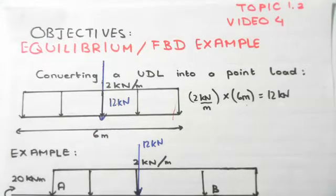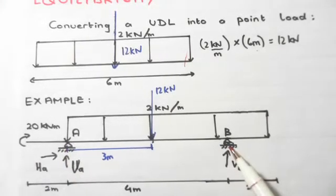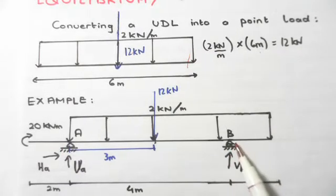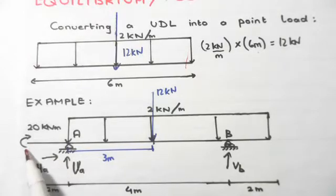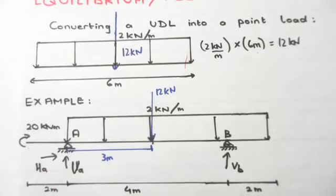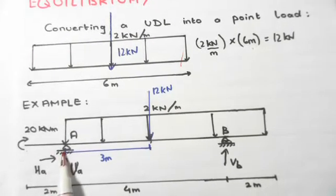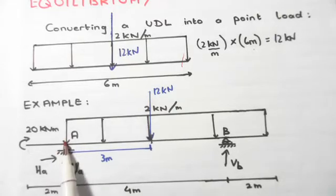Now consider the following example in equilibrium and free body diagrams. We have a simply supported beam with a pin on one side and a roller on the other. It cantilevers out on both sides by two meters each — two meters to the right and two meters to the left. At the left end we have a clockwise 20 kilonewton-meter moment, two meters away from the left-hand support. The span from the pin to the roller is exactly four meters.